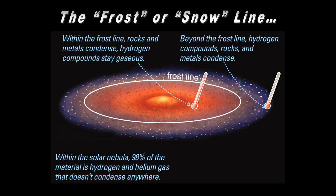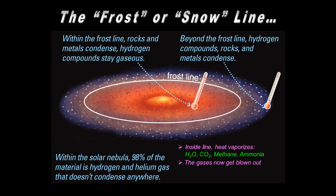Ninety-eight percent of this nebula is hydrogen and helium to begin with, and that stays in gaseous form — it doesn't condense out anywhere. Inside the frost line, the water, carbon dioxide, methane, and ammonia — these are volatiles, hydrogen-containing materials — will vaporize at the temperatures that exist inside the line. They can only exist in their relatively solid molecular form outside the frost line.